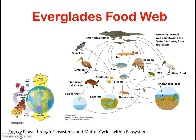Since energy flows through ecosystems, ecosystems must have a consistent energy source. For most ecosystems, that energy source is the sun, which then can be used by the first level of the food chain — photosynthetic plants and algae — the producers.